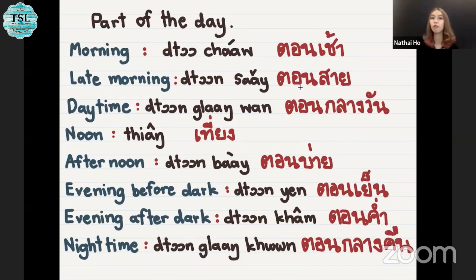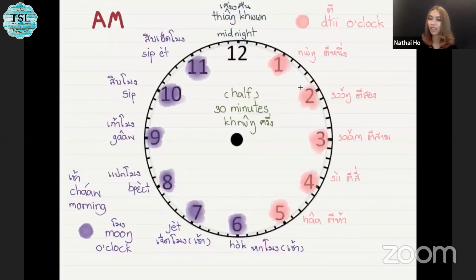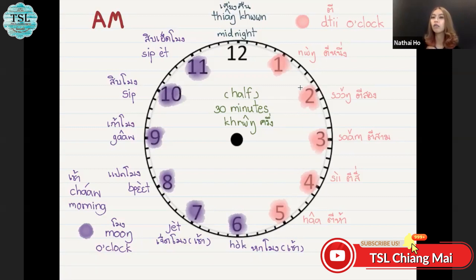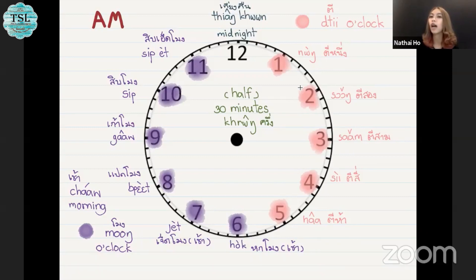After learning vocabulary and parts of the day, let's see how to tell the time. We will start with AM first, beginning from midnight. Midnight in Thai, we say เที่ยงคืน. After midnight, you need to know about ตี. ตี is how to say o'clock at night time. So 1 AM, we say ตีหนึ่ง, ตีหนึ่ง. And continue like counting numbers.